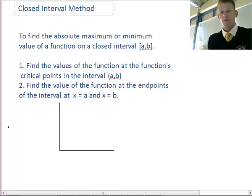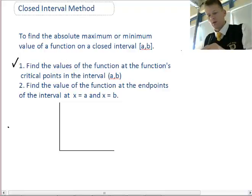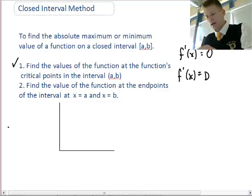The closed interval method finds the absolute maximum and minimum value of a function on a closed interval from A to B. Typically these values will be like from 3 to 5 or from pi to 2 pi. To do this, you first find the values of the function at the function's critical points, which are where the derivative f'(x) equals 0 or where the derivative does not exist.